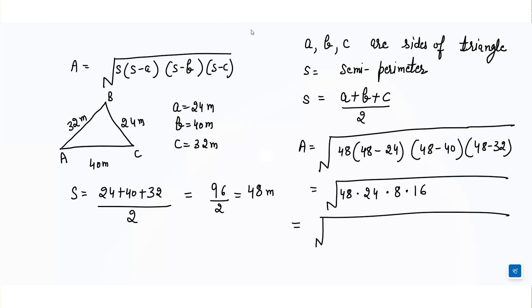To find the square root, I'll write 48 as 6 into 8, 24 as 6 into 4, 8 as 8 only, and 16 as 8 into 2. Now you can see here 6 and 6 are pairs, I'll write them together. Similarly, 8 and this 8 are a pair.